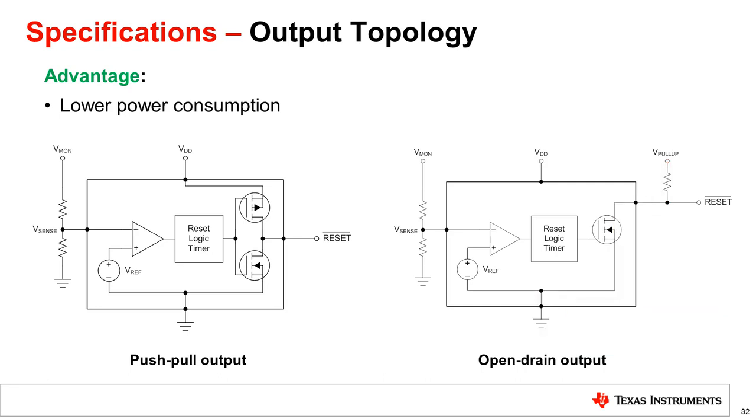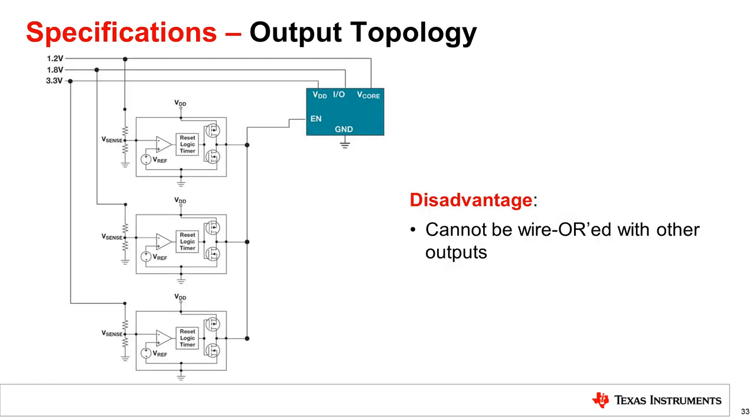In addition, since no pull-up resistor is required for a push-pull supervisor, cost is reduced and quality is improved due to the reduction of discrete components. One disadvantage of the push-pull output is that multiple outputs should not be wired or together. When one supervisor detects an under voltage condition and the other supervisors detect a normal voltage operating condition, the supervisor detecting the under voltage condition will pull to ground while the other supervisors will pull up to VDD. This effect causes a metastable state at the enable pin of the monitor device and would likely lead to system failure.